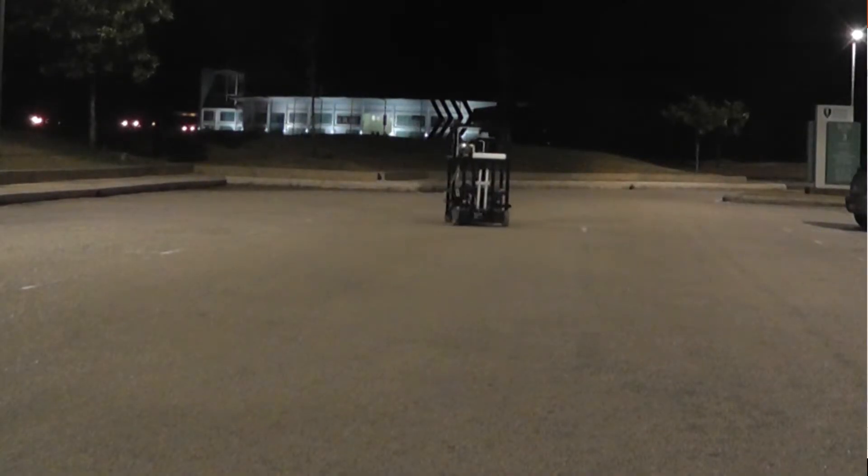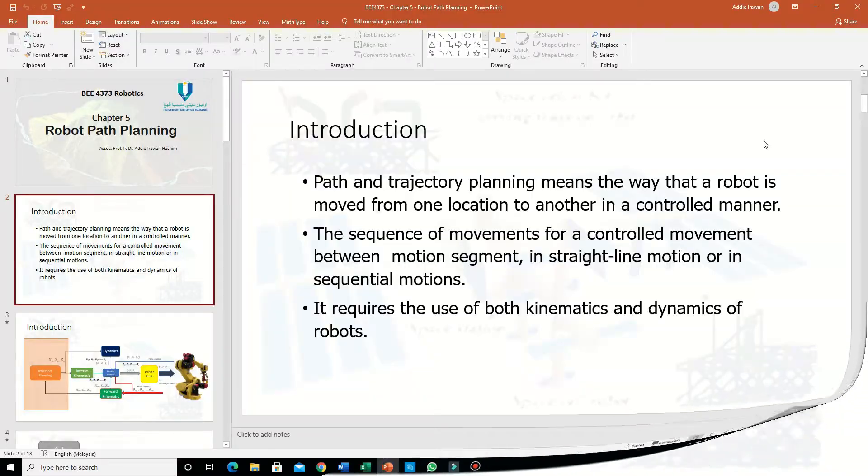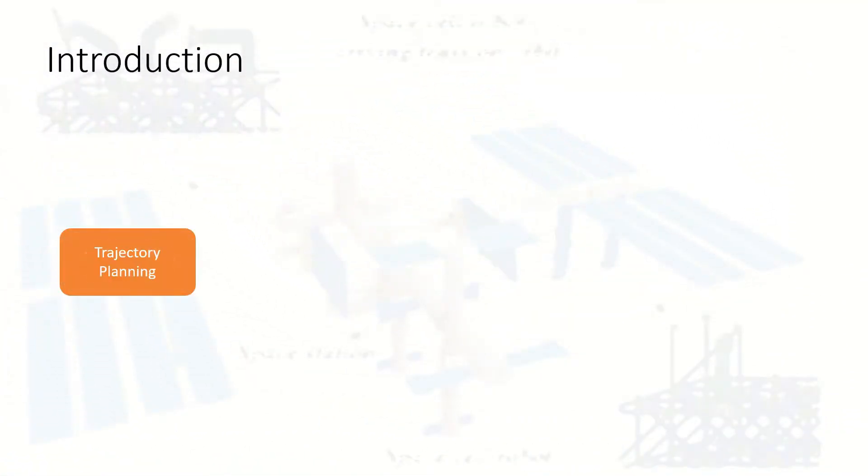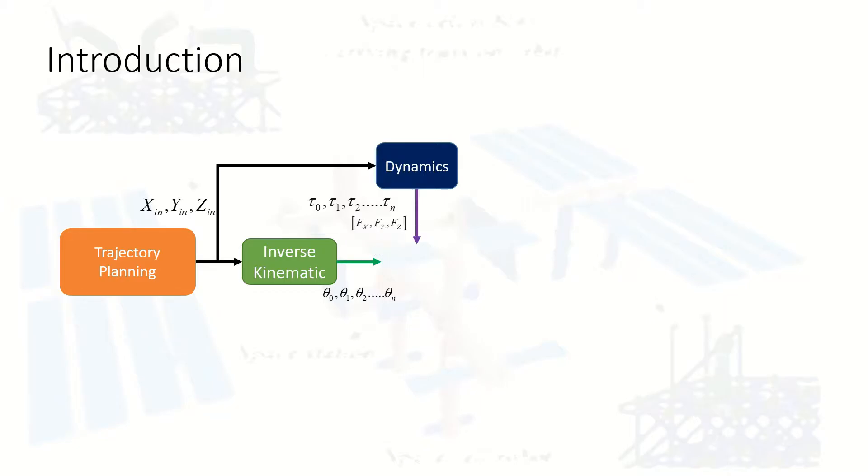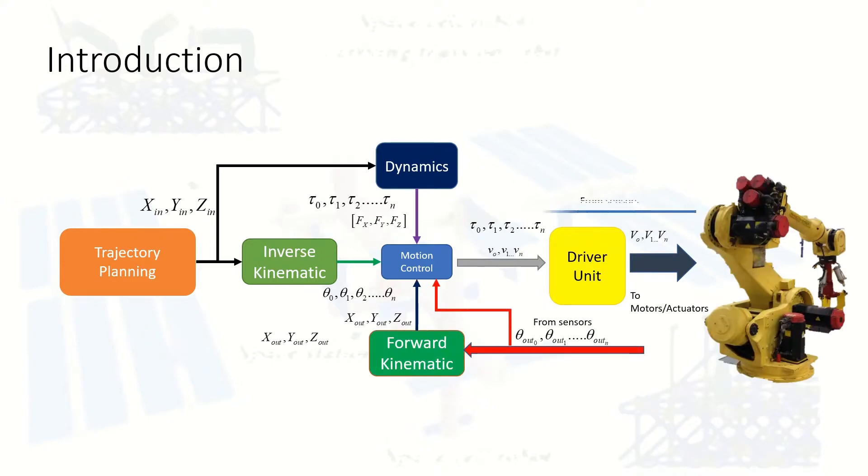Some trajectories or motions of the robots require both kinematics and dynamics of the robots. Let's go back to the robot control structures. In the previous video, I discussed the basic control structure of the robot as in the figures.